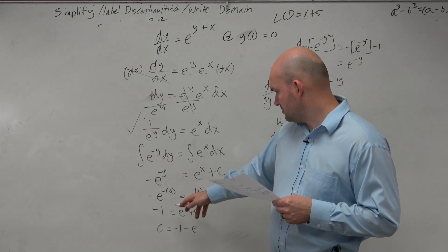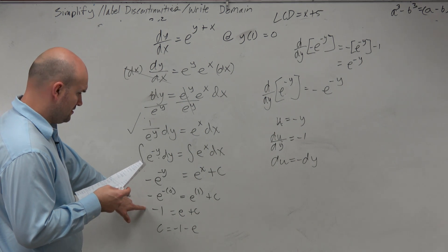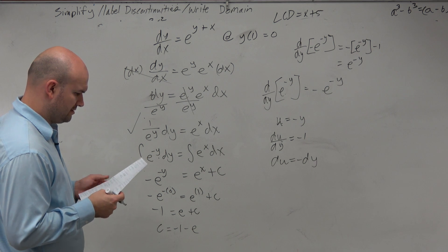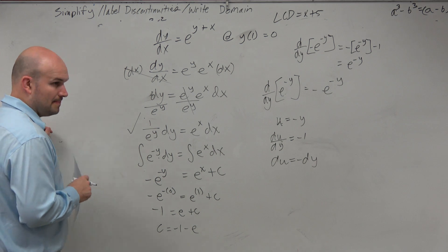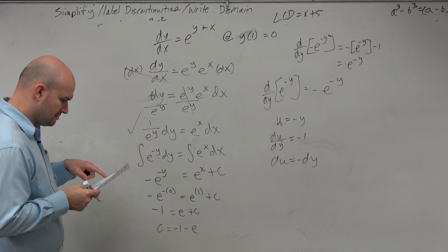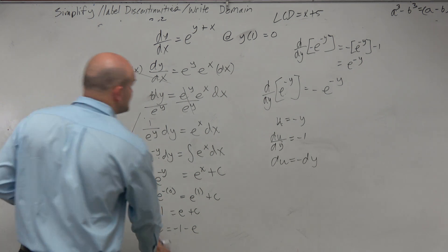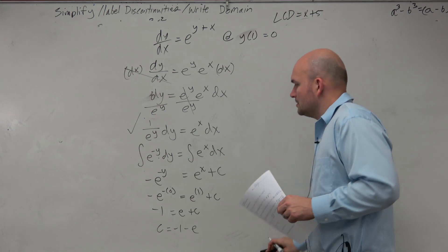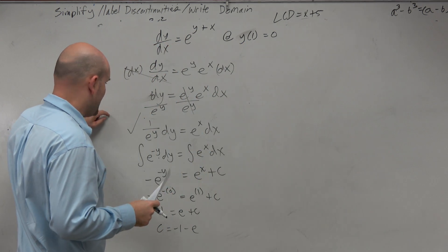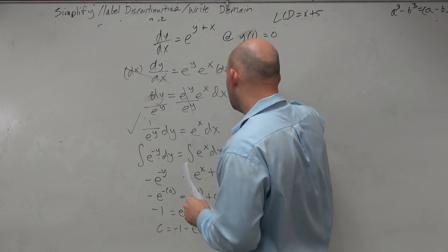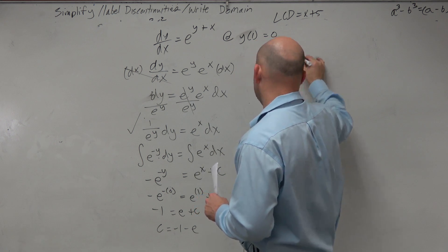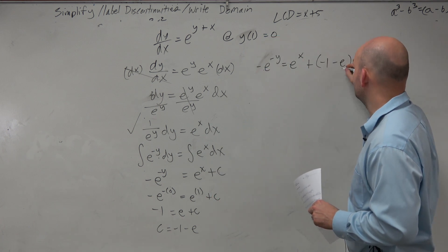That gives me negative 1. I think I made a mistake on the worksheet, but I'm seeing that e to the 1 is just e, so therefore it's negative 1 minus e, and I'm not seeing anything wrong there. So now let's go ahead and plug that value of C into our equation and solve for y. Here was our equation: negative e to the negative y equals e to the x plus C, and now we're plugging in our C, which is negative 1 minus e.